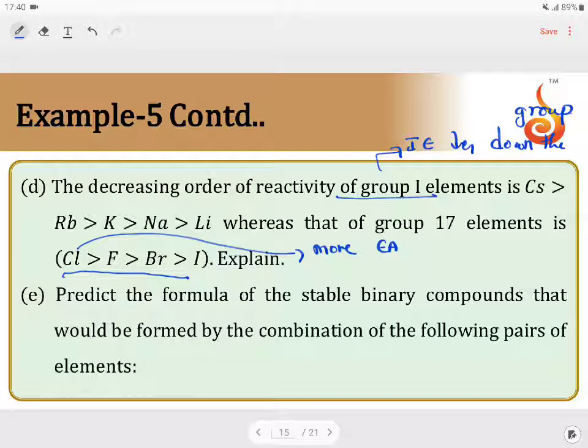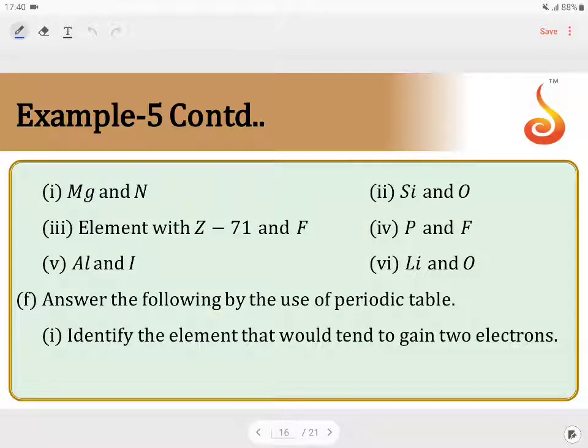Next question is, Predict the formula of the stable binary compound. Binary compound, you have to find out. First is between Magnesium and Nitrogen. Magnesium valence is 2. Since it is a metal, I'll write it as 2+. Nitrogen valence is 3. Since it is a non-metal, I'm writing 3-. The formula will be Mg3N2, Magnesium nitride. So, it is Mg3N2.